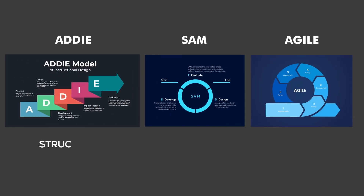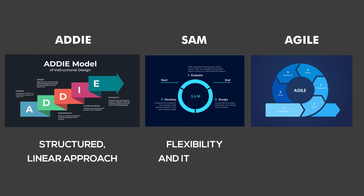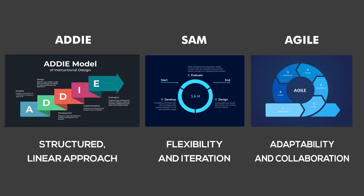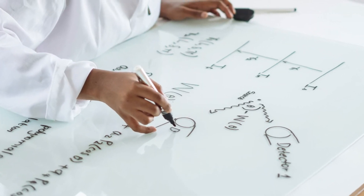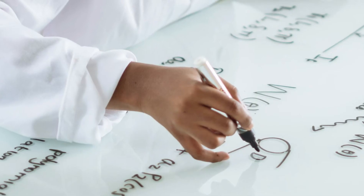ADDIE offers a structured, linear approach, while SAM prioritizes flexibility and iteration. Agile emphasizes adaptability and collaboration, making it ideal for projects with changing requirements.